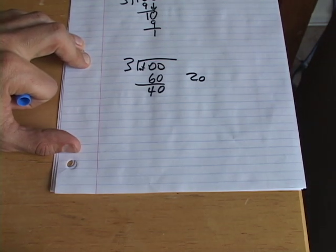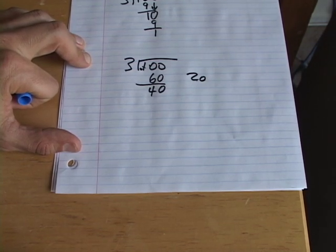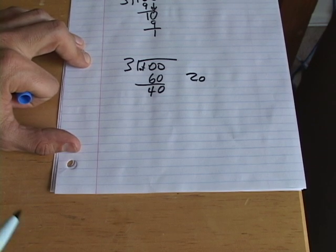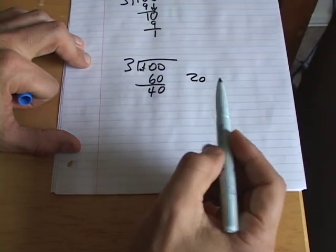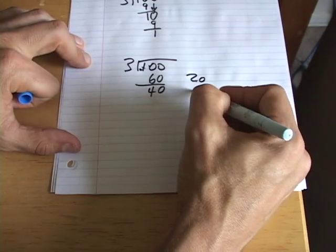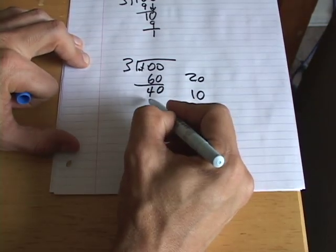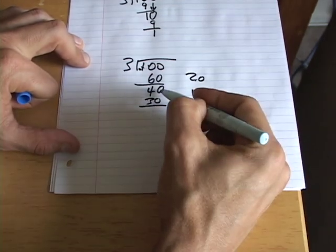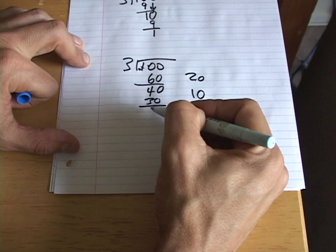So now we're going to guess, how many times does 3 go into 40? I don't know. Let's say I'm not really that great at multiplication tables. I could say, well, 3 times 10, I know 3 times 10 is going to be 30. So I put the 10 there, and I go 3 times 10, and I have a 30. And then I go 0 minus 0 is 0. 4 minus 3 is 1.